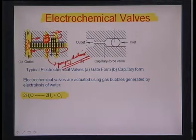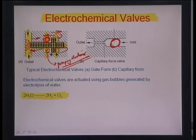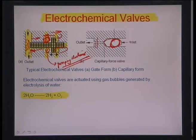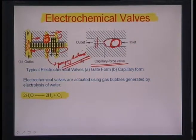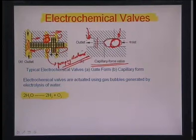Similarly, you could have a blocking mechanism where a bubble generated by an electrode is too big and blocks a port, cutting off flow from the inlet to the outlet side. This is called a capillary force valve. A pressure gradient ensures the bubble stays in place and stops the flow. That is how an electrochemical valve would operate.